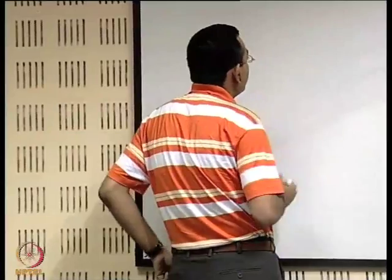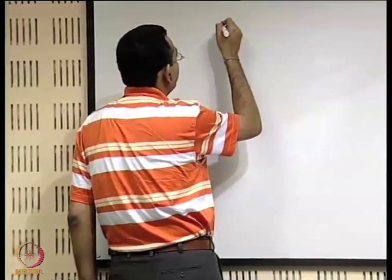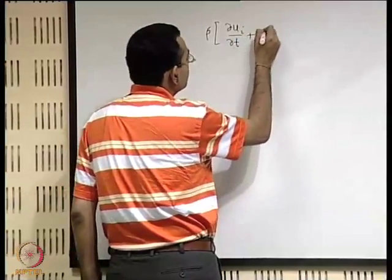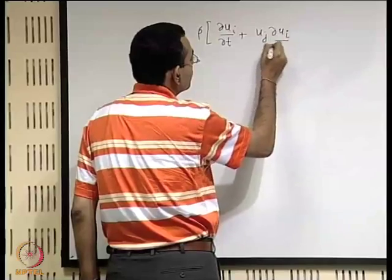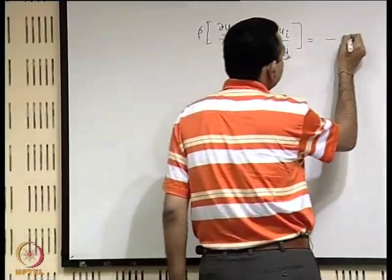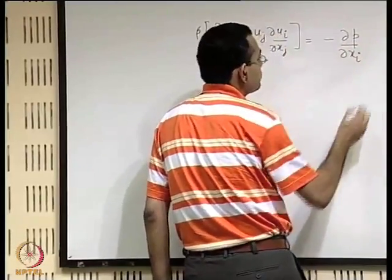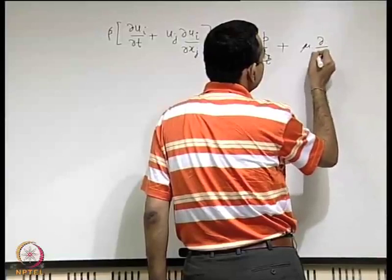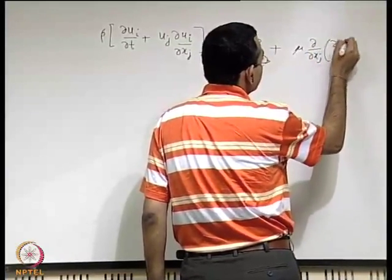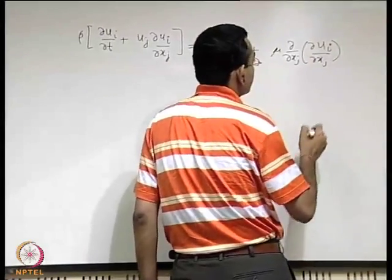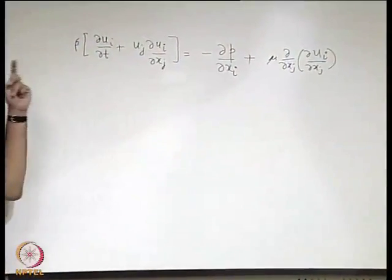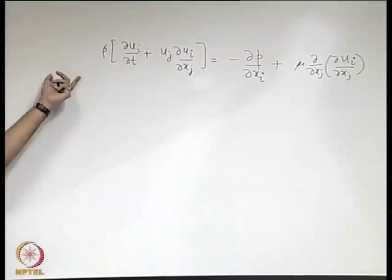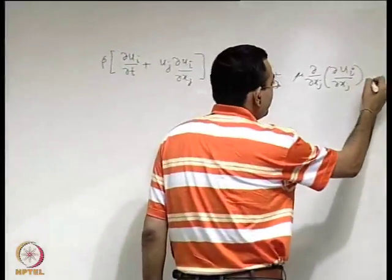So if we try to revisit the form that we derived for the Navier-Stokes equation — we derived this particular form, which was for a special case. Can you remember what is the special case? Incompressible flow. Let us also put a body force to make it a bit more general.